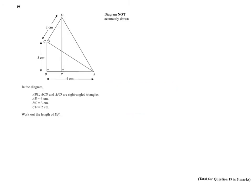This question is obviously 5 marks, so it's a wee bit more involved. We're given some distances on the triangles, all of which are right-angled triangles, and we're asked to work out the distance of DP.